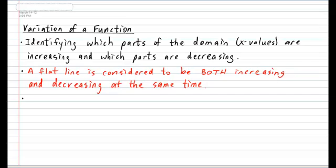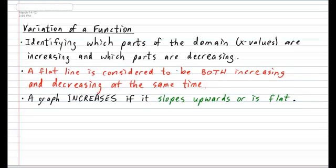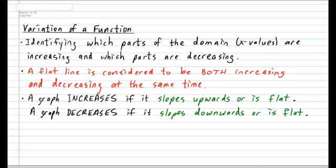Now with that being said, let's take a closer look at what increasing means. When we talk about increasing we are looking for all the parts of a graph that slope upwards or is flat. A graph decreases is the opposite. We're looking for all the sections of the graph that slope downwards or is flat.